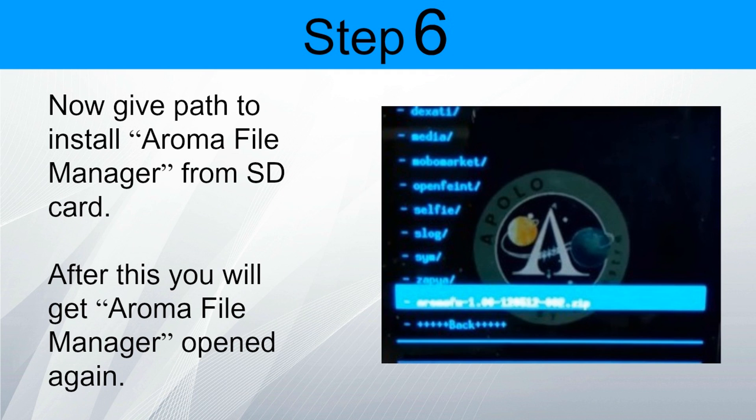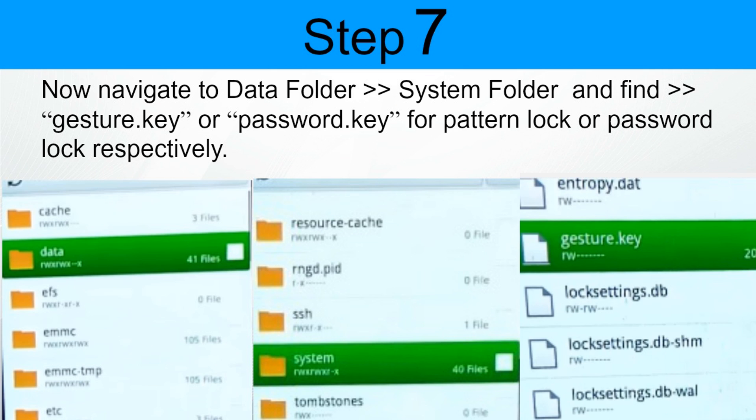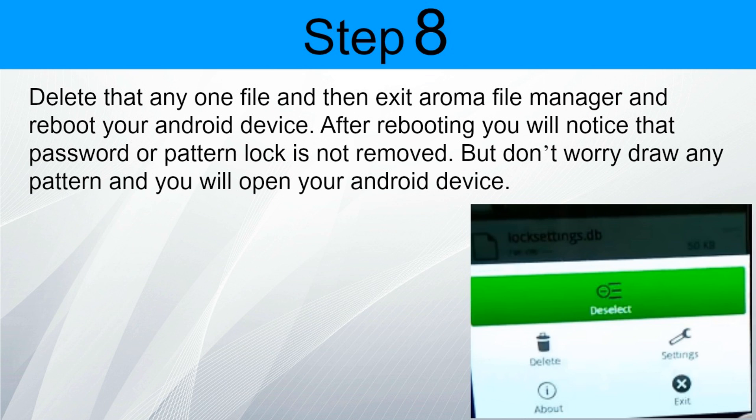Now give the path to install Aroma file manager from the SD card. After this, you will get Aroma file manager opened. Step 7: Go to the data folder, then system folder, and find gesture.key or password.key respectively. If you are using pattern lock you will find gesture.key; if you are using pin code you will find password.key. Step 8: Hit the menu button and delete gesture.key or password.key, then exit Aroma file manager and reboot your android device. After rebooting, you will notice the pattern lock screen still appears, but don't worry — draw any pattern and you will open your android device.